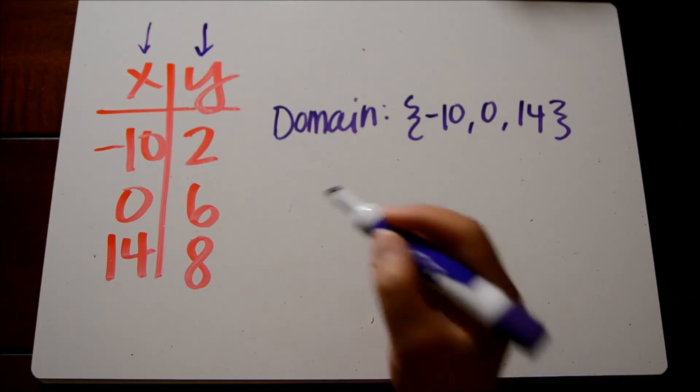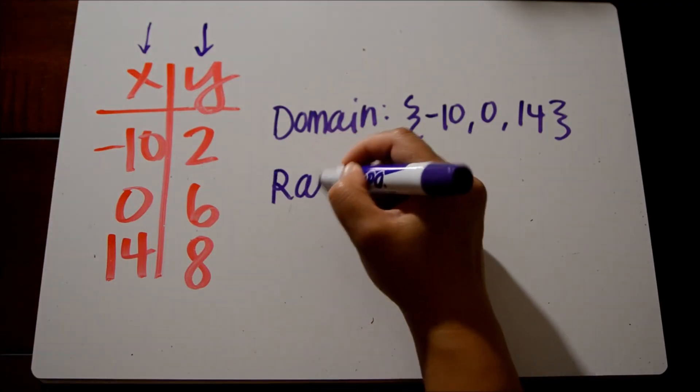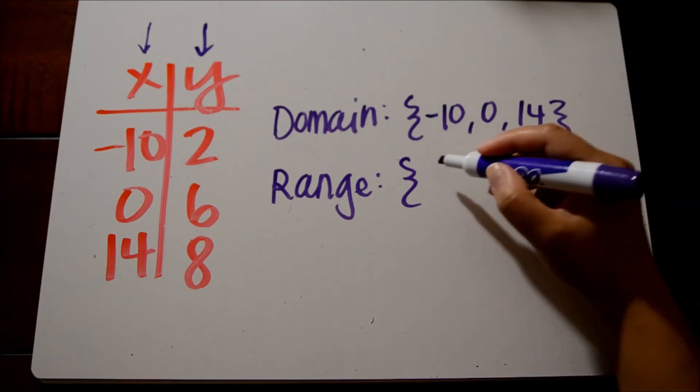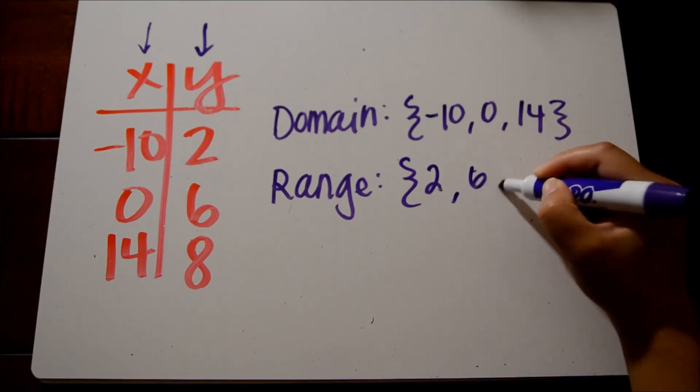Here are our range values, our y values. In order from least to greatest, that is going to be 2, 6, and 8.